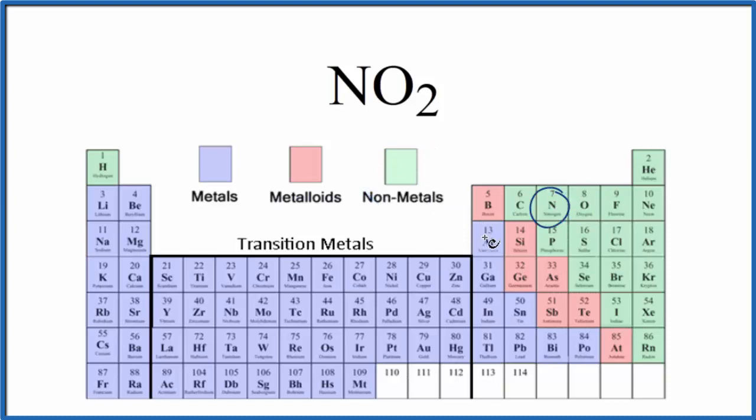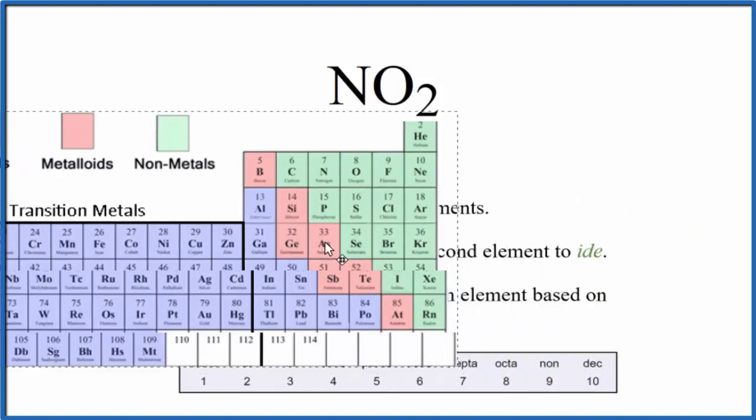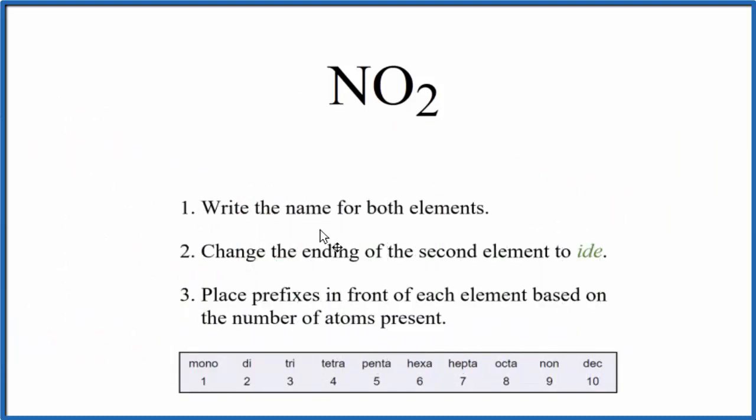So when we have nonmetals bonded together, that is a covalent, also called molecular compound. So we can use these rules here to write the name for NO2.